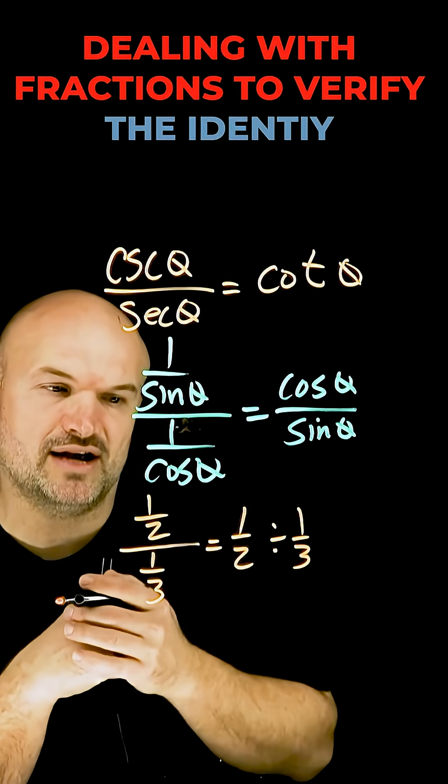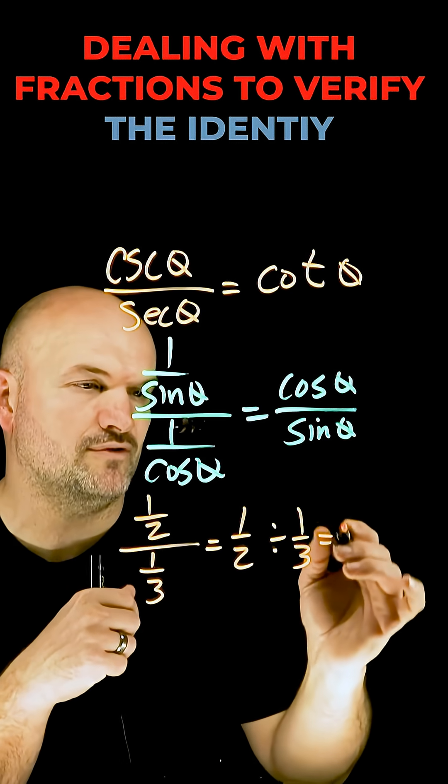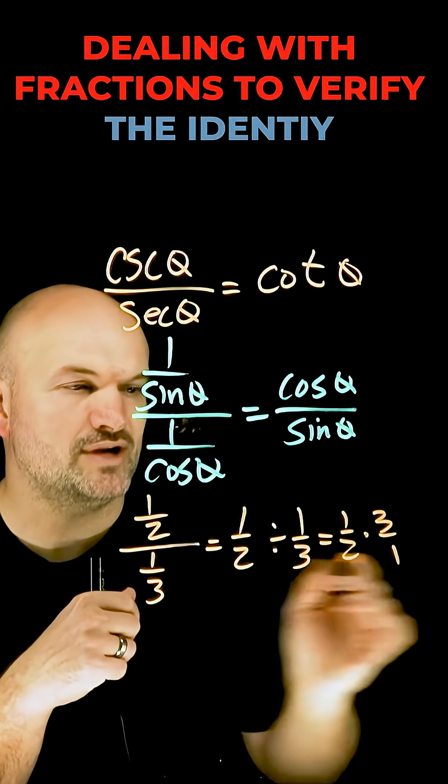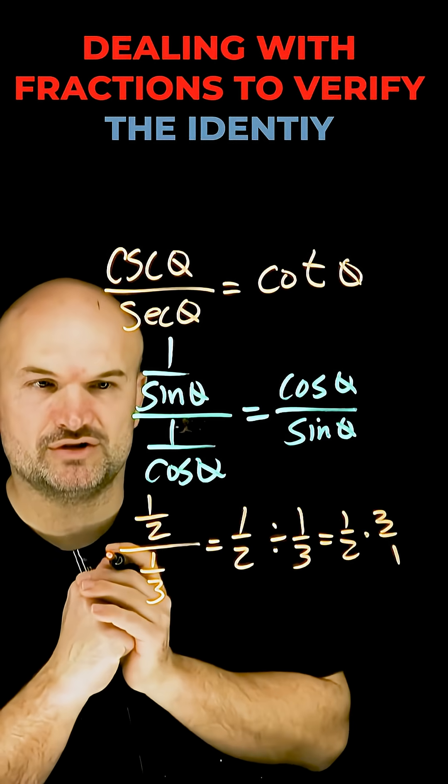We reciprocate the divisor and treat it as multiplication, so therefore it's one half times three over one. Now we can multiply straight across.